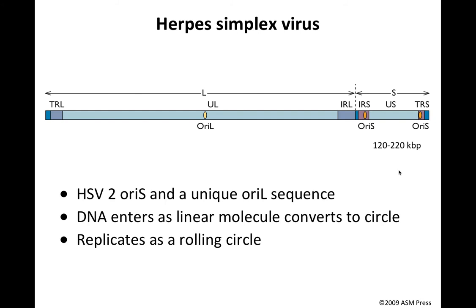These are viruses with rather large genomes ranging from 120 to 220,000 base pairs in length. Famous members include herpes simplex virus, Epstein-Barr virus, cytomegalovirus, and a few others. These genomes are double-stranded linear DNAs, and one feature is that they are present in large and short segments that can be inverted with respect to one another, giving four different combinations of L and S. These viruses have three different origins of replication: an Ori-L and two Ori-S origins.